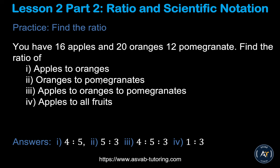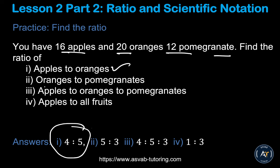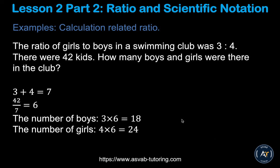Here is an example you can try by yourself. You have 16 apples, 20 oranges, and 12 pomegranates. Find the following ratios: apples to oranges is 4 ratio 5, oranges to pomegranates is 5 ratio 3, and apples to oranges to all fruits is 1 ratio 3. Try it by yourself and you'll understand.